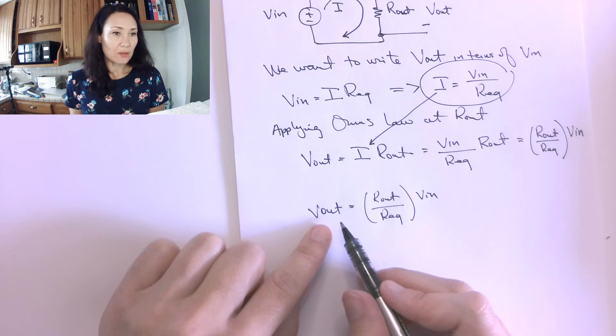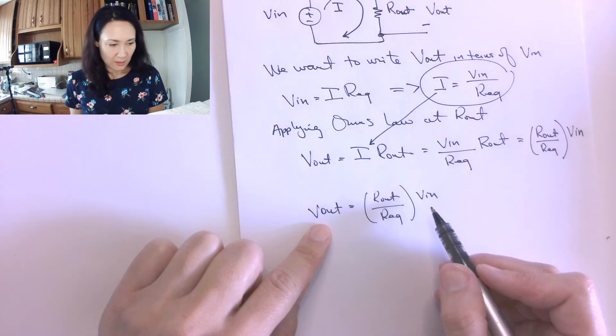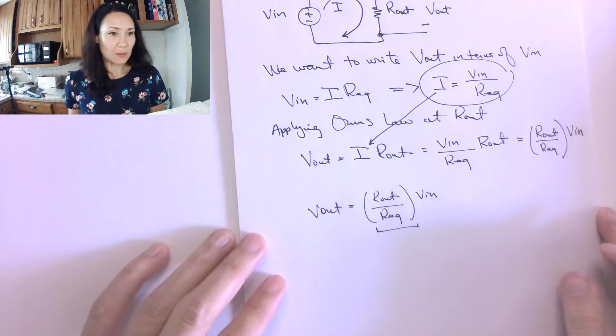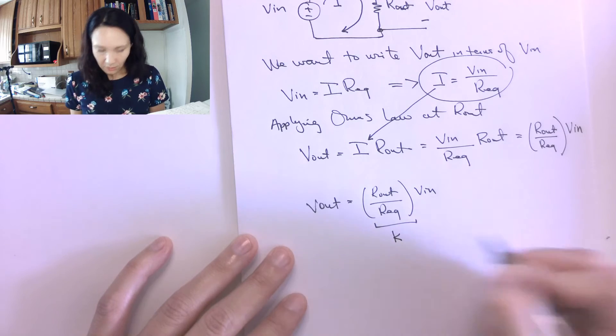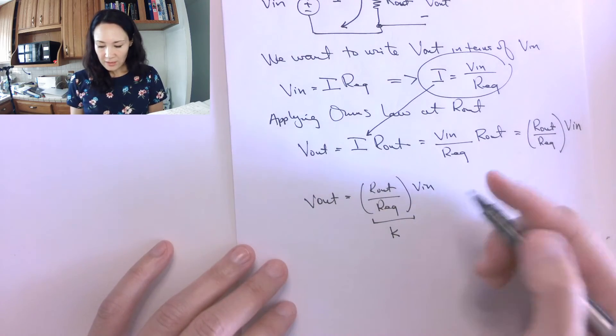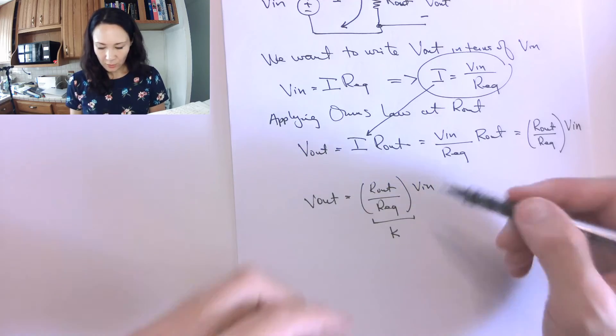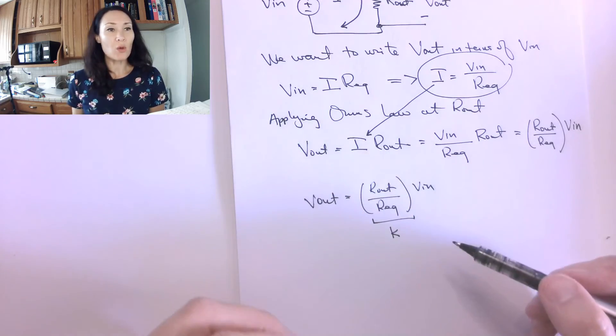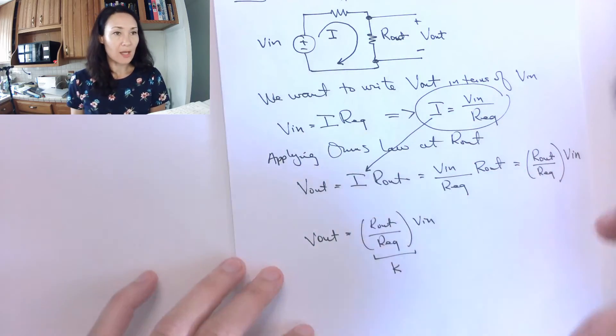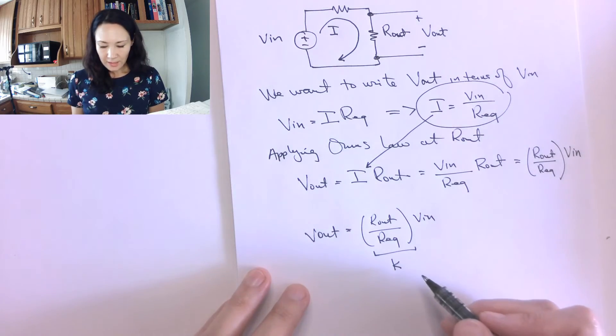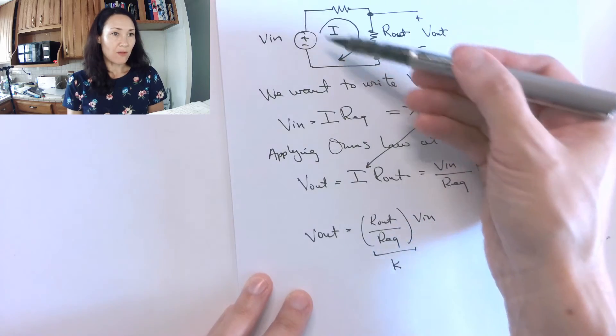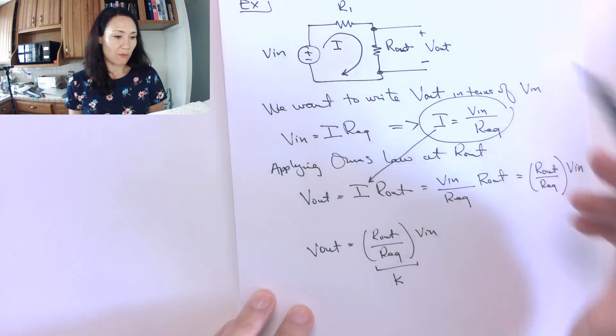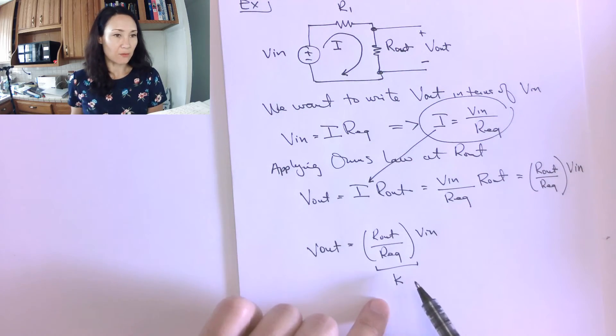Here's our equation. This is v out as a function of v in. And this stuff right here that's being multiplied by v in, this is our scale factor k. So don't write this as like a ground truth equation, because this is only true for this particular circuit. In this case, our scale factor is determined by whatever this resistance is, divided by r equivalent, so the sum of both of these. But this is going to be different every time.